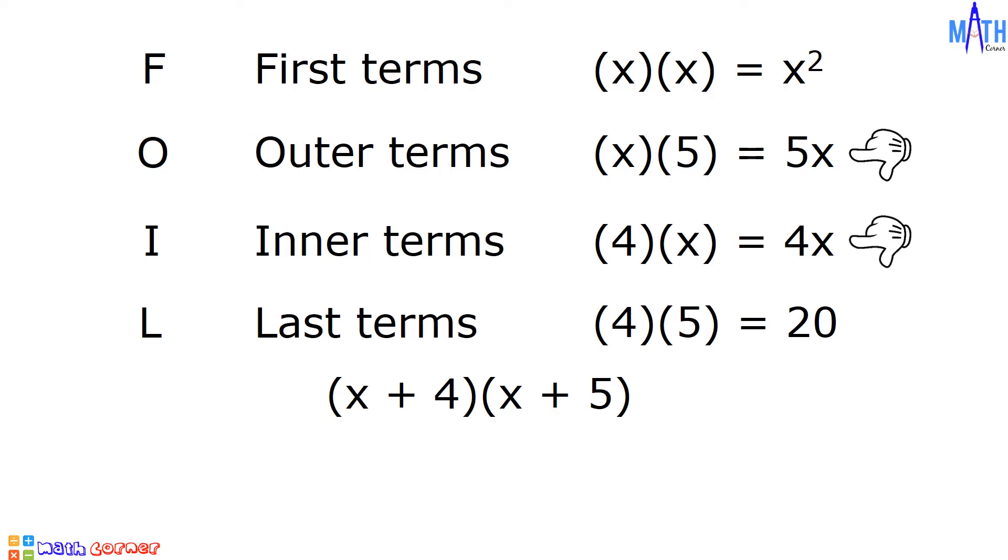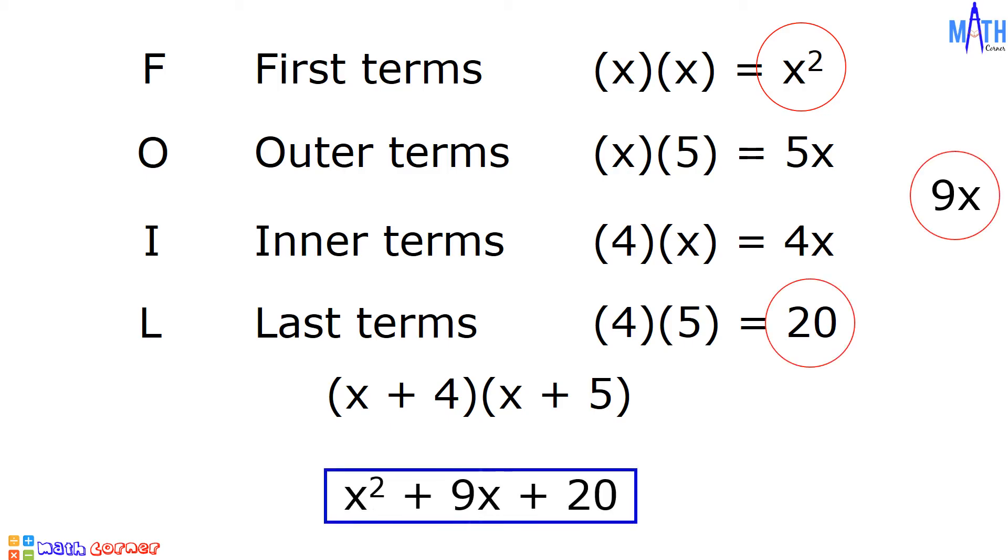Since 5X and 4X are like terms, they have the same literal coefficient, let us combine them. 5X plus 4X equals 9X. And we have X squared plus 9X plus 20. And this is the product.